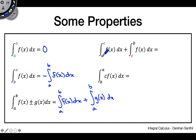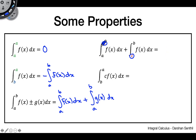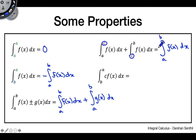This next property is useful: if you have some value c that appears as the upper bound of one integral and the lower bound of another, you can combine them into a single integral from a to b. Likewise, you can go backwards — take any point c between a and b and break one integral into two: from a to c and from c to b. This property works both ways.